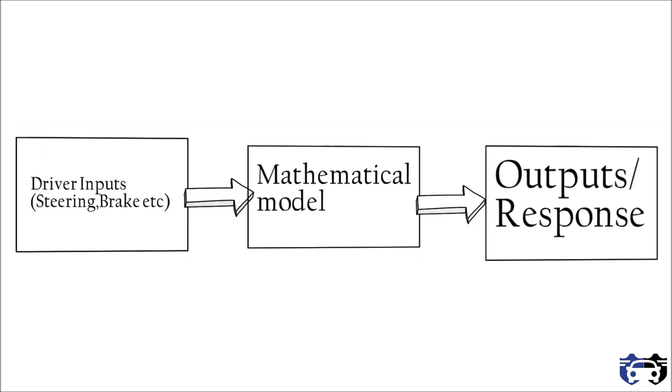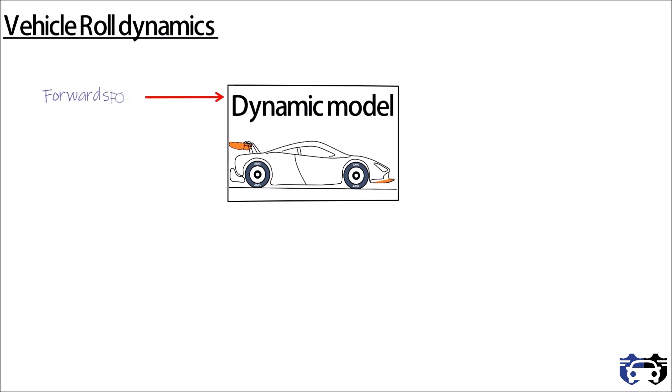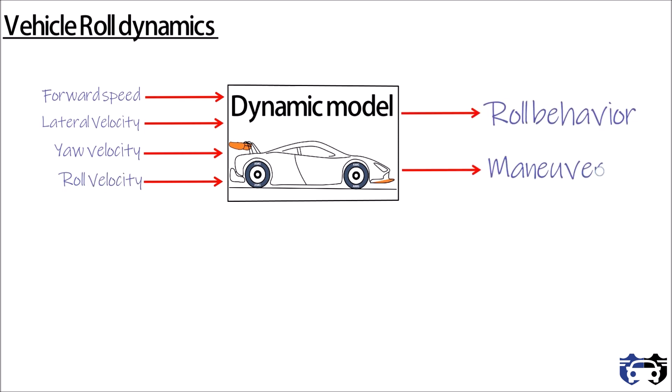Everything in vehicle dynamics revolves around mathematical models, so in vehicle roll dynamics we will also consider a dynamic model for a rigid vehicle. In this model, forward speed, lateral velocity, yaw velocity, and roll velocity are considered, and we are able to analyze the roll behavior and maneuvering of the vehicle.